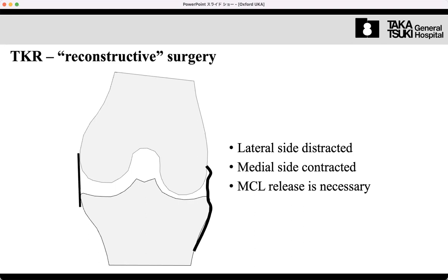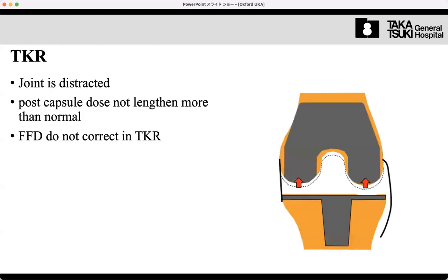In the TKA patient, the lateral side is disrupted and medial ligaments and soft tissue are contracted. To reduce it, we need some release of soft tissue. Once we release the soft tissue and adjust the gap, we refer to the lateral ligament to make the same gap in the lateral and medial.